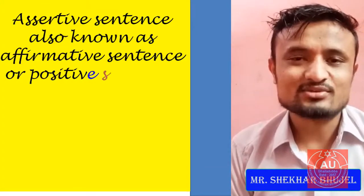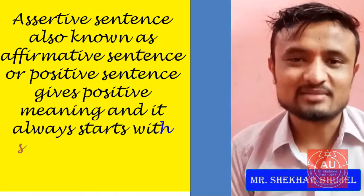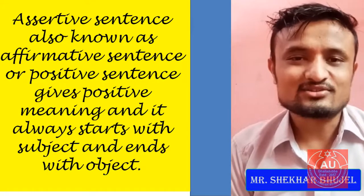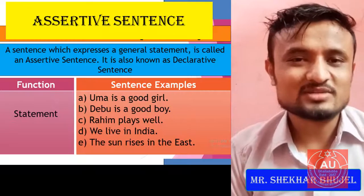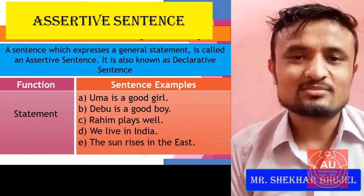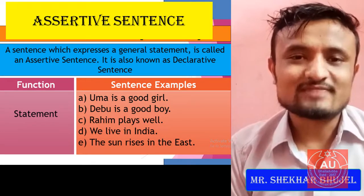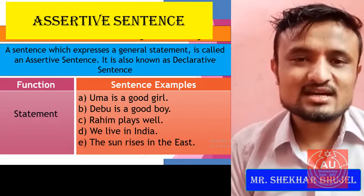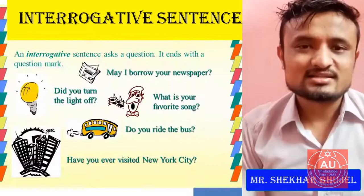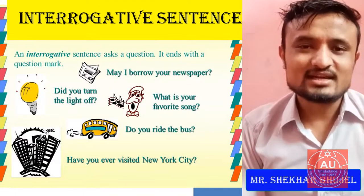First, the assertive sentence. An assertive sentence is the type of sentence which begins with your subject and ends with an object, giving a positive meaning. It is also called a positive sentence or affirmative sentence. For example: 'Ram plays very well.' 'Sita always goes to market.'